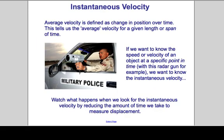Average velocity is defined as a change in position over time. This tells us the average velocity for a given length or span of time. If we want to know the speed or velocity of an object at a specific point in time with a radar gun, we need to know its instantaneous velocity. Watch what happens when we look for the instantaneous velocity by reducing the amount of time that we take to measure displacement.